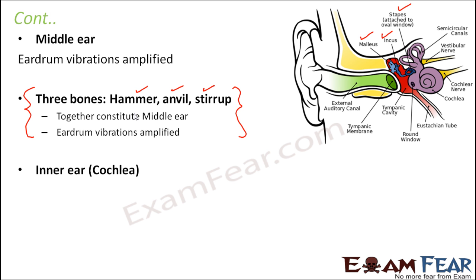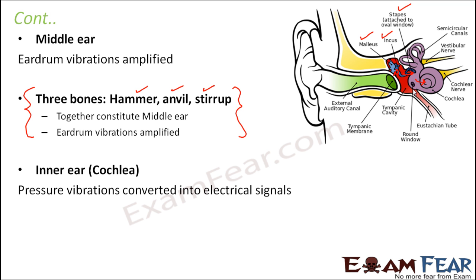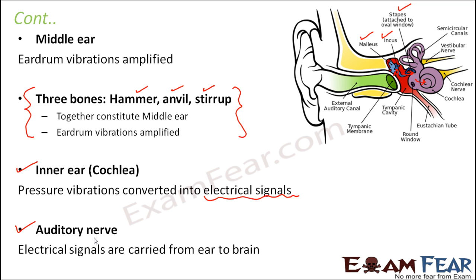Once the vibrations are amplified they reach the inner ear, which is also called the cochlea. The cochlea is this coiled structure which you see here — that is the most important part of the inner ear. In this part the vibrations are converted into electrical signals, because the vibrations alone are not going to help you. The vibrations need to be sent to the brain so that the brain can interpret what you are hearing. The vibrations are converted into electrical signals with the help of your nerves, and then the nerves carry these signals to the brain, and then the brain responds back — that's how you are able to understand what you heard. These conversions take place in the inner ear, and then with the help of the auditory nerve it is sent to the brain.